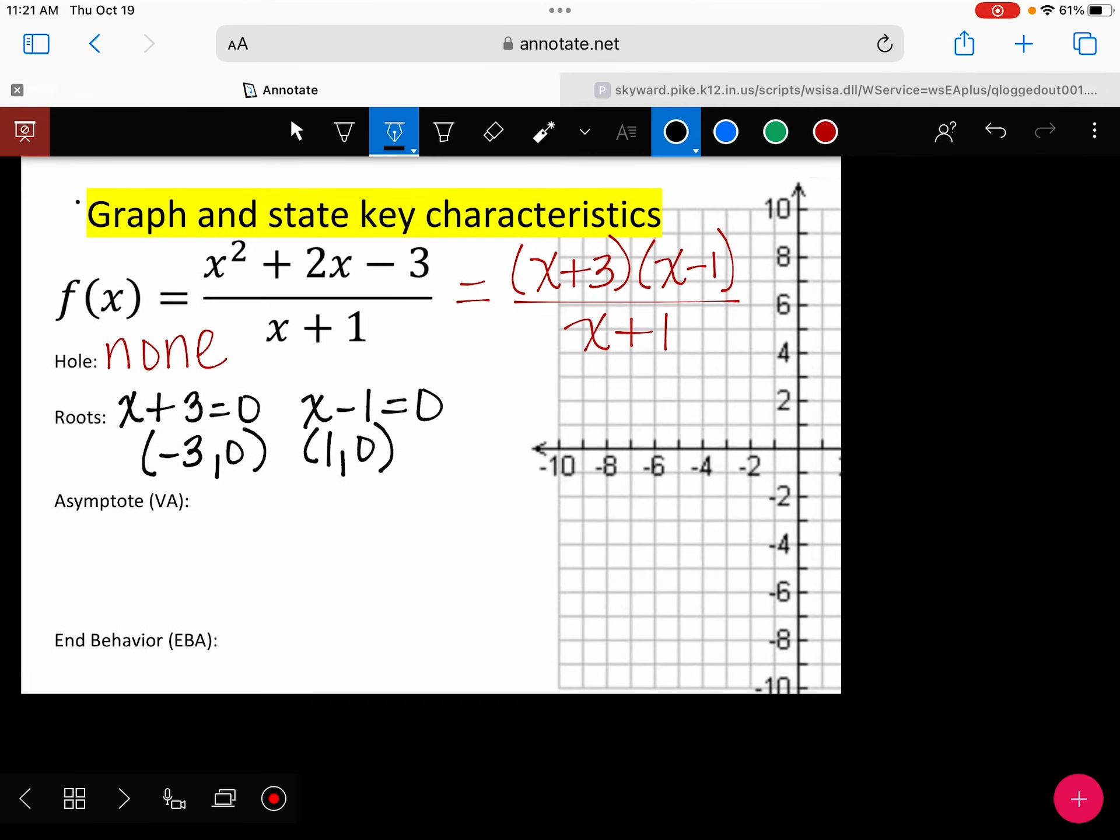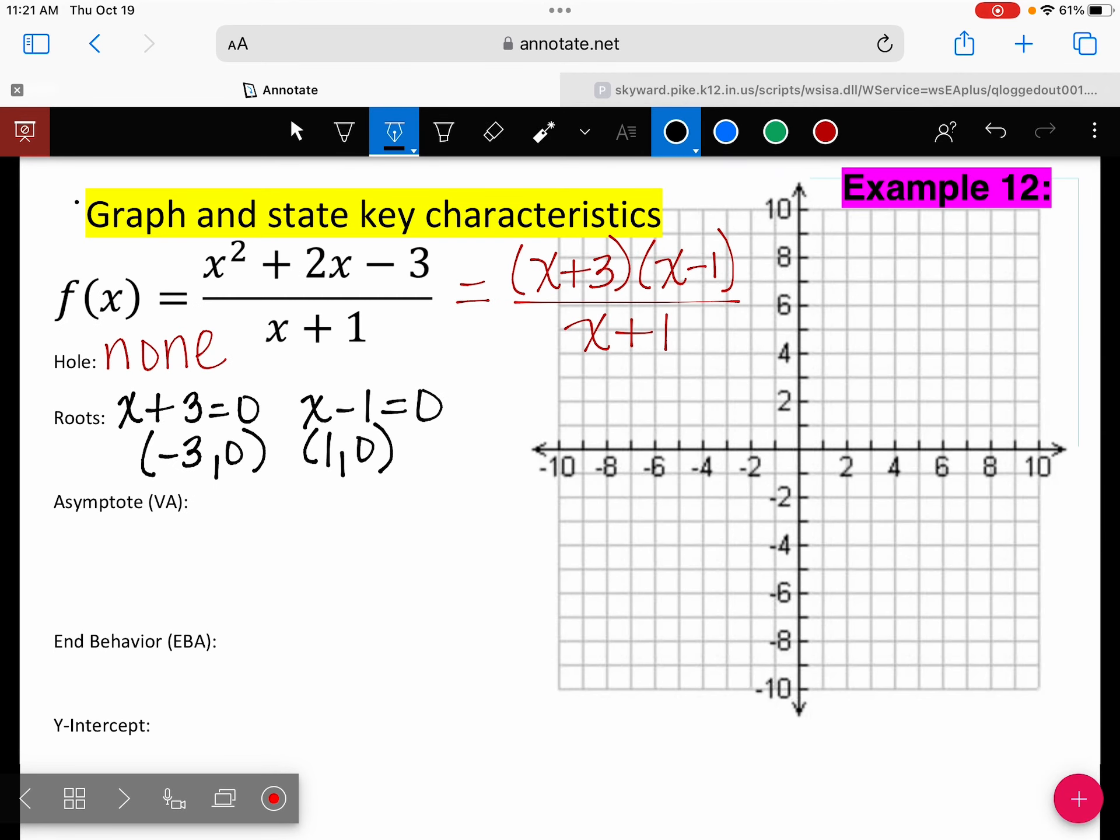Let's go ahead and plot them both. Negative 3, positive 1. We're going to put both of those. Those are the only x-intercepts.